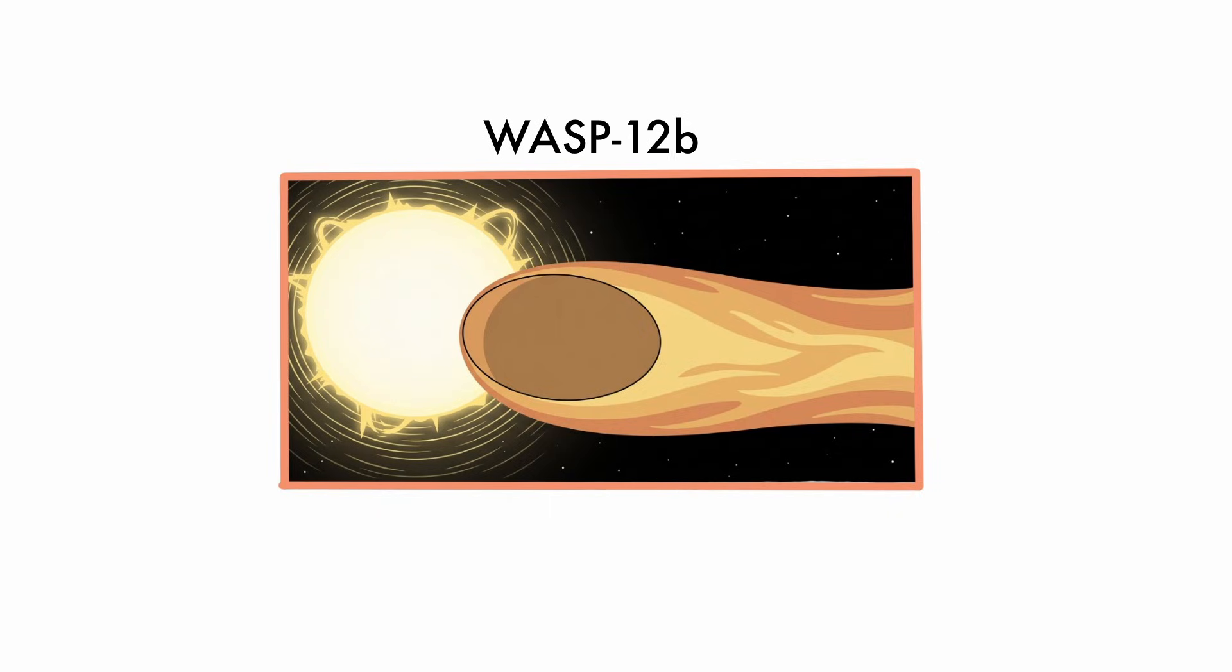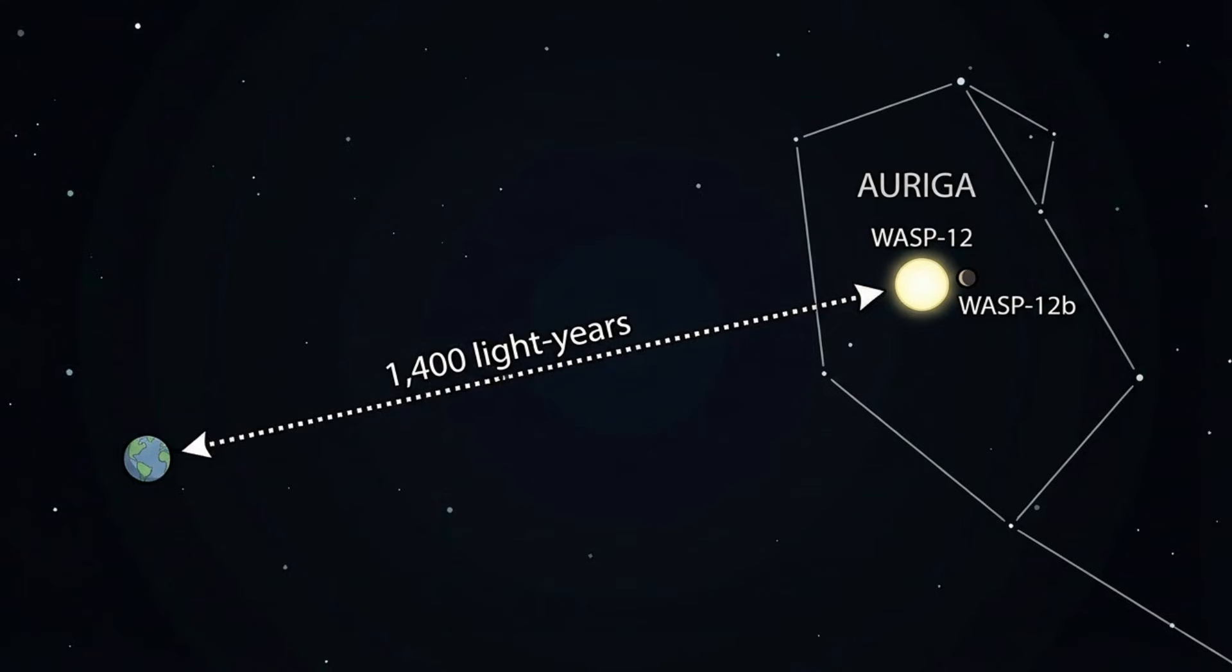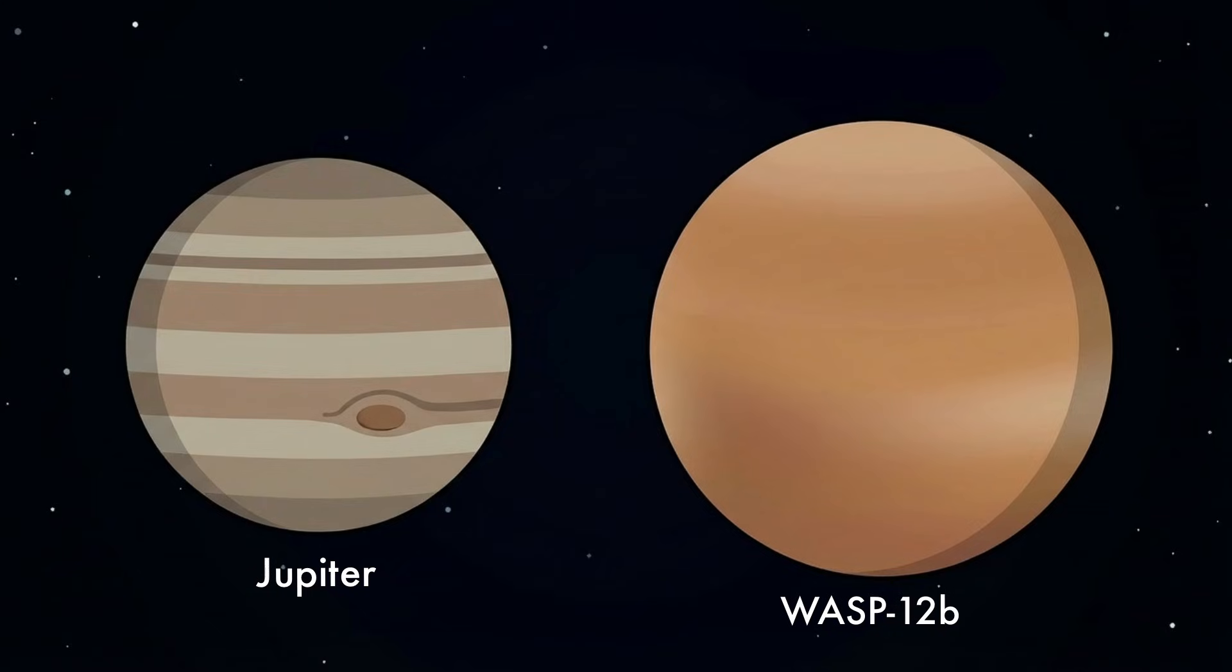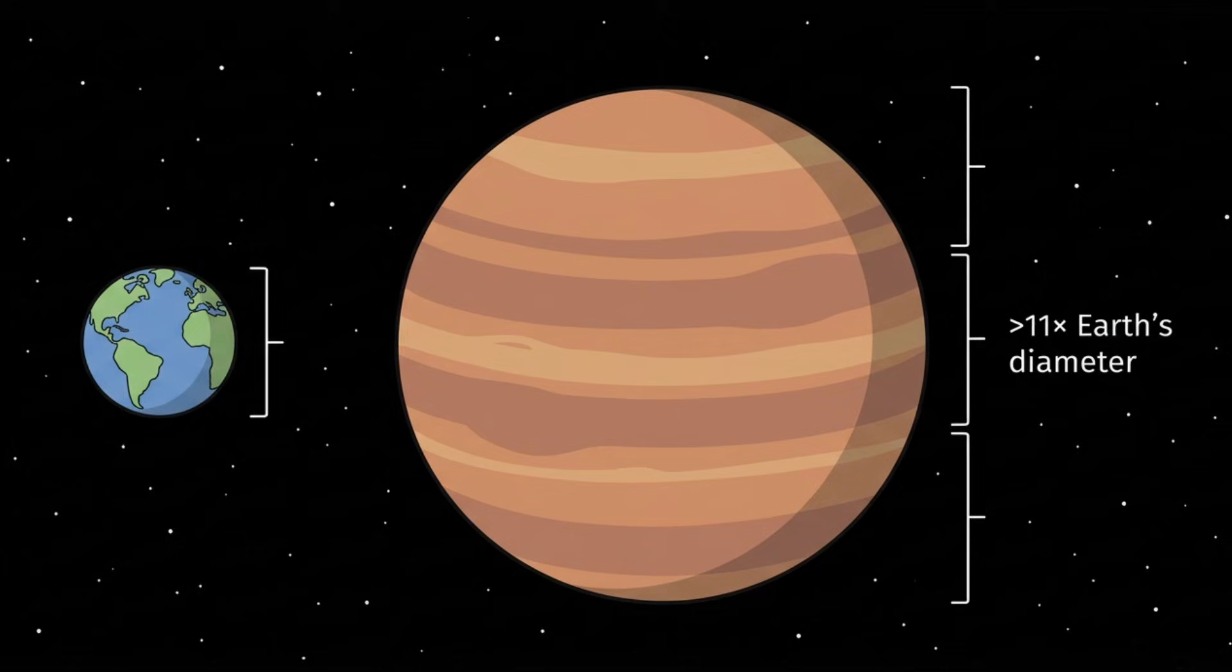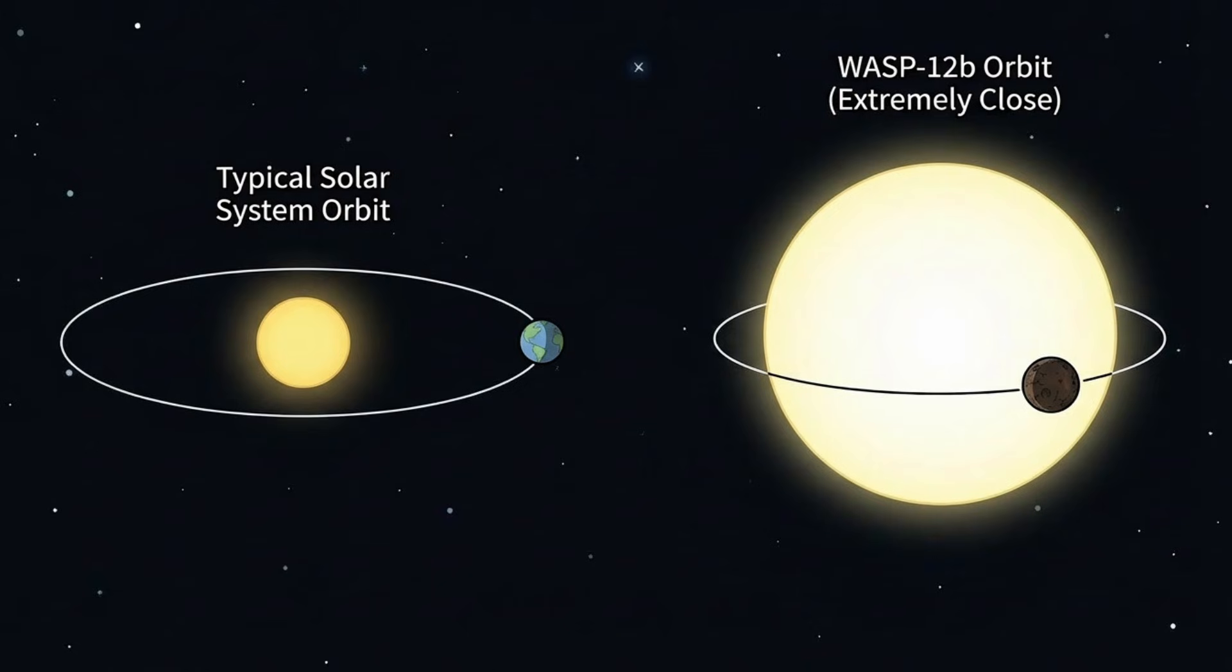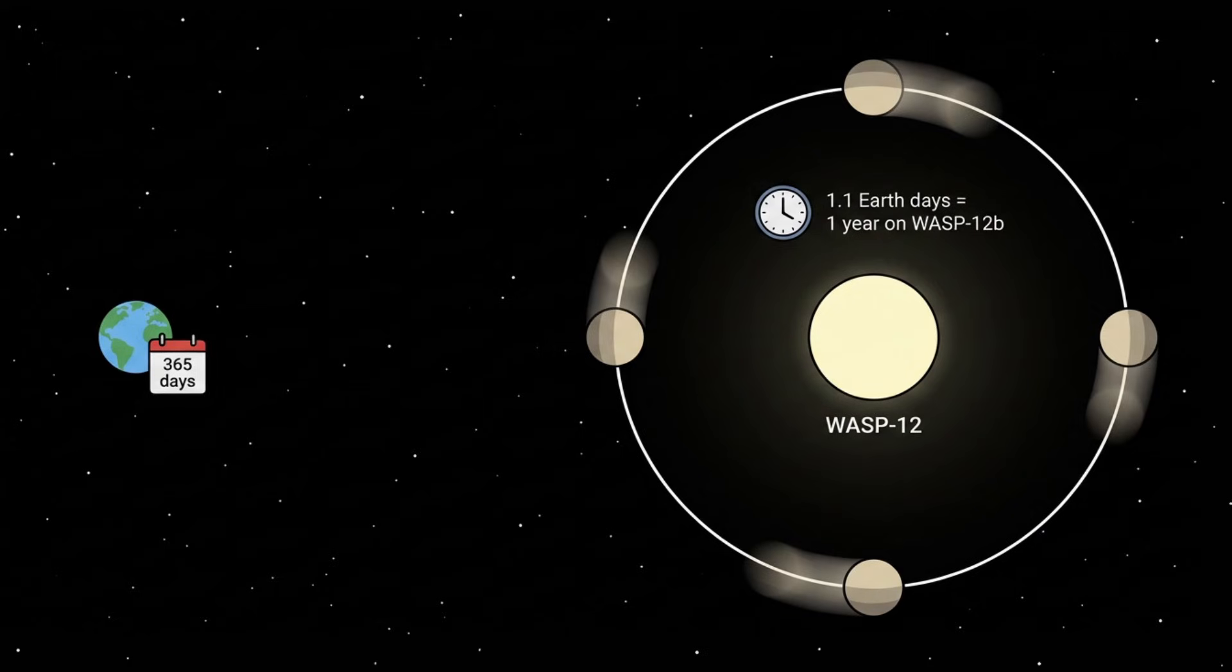WASP-12b, a planet that's being eaten alive. WASP-12b is located about 1,400 light-years from Earth in the constellation Auriga. It is a gas giant slightly larger than Jupiter, more than 11 times the diameter of Earth. Unlike planets in our solar system, WASP-12b orbits its star at an extreme distance, so close that one full year on the planet lasts just 1.1 Earth days. If Earth were placed at this distance, it would not survive a single orbit.